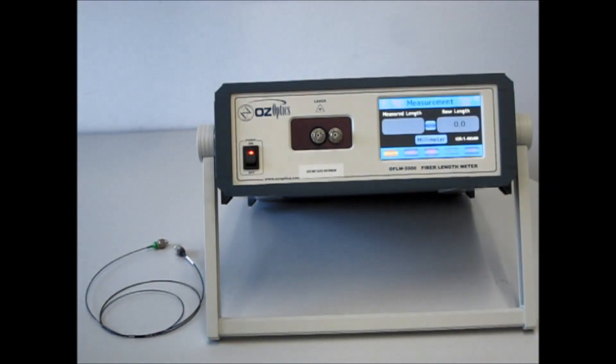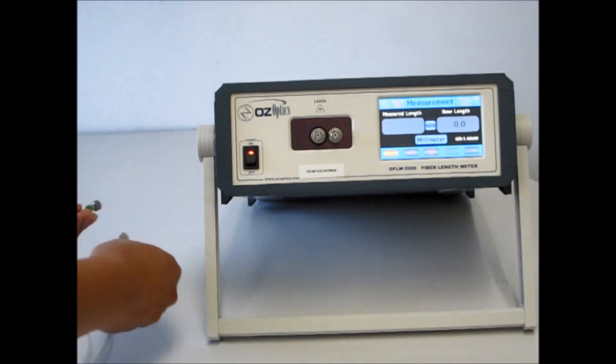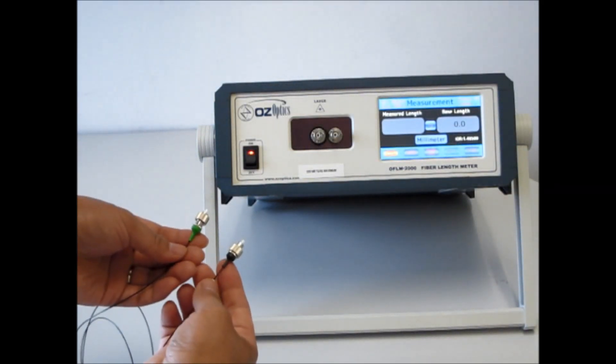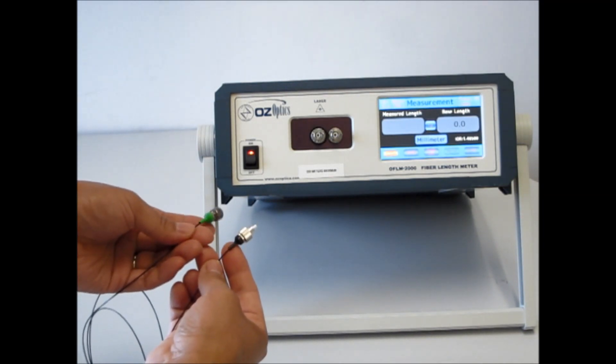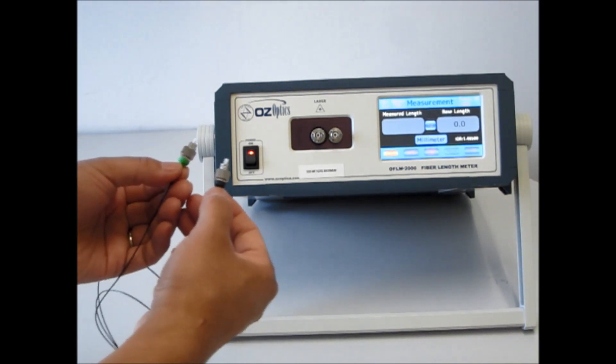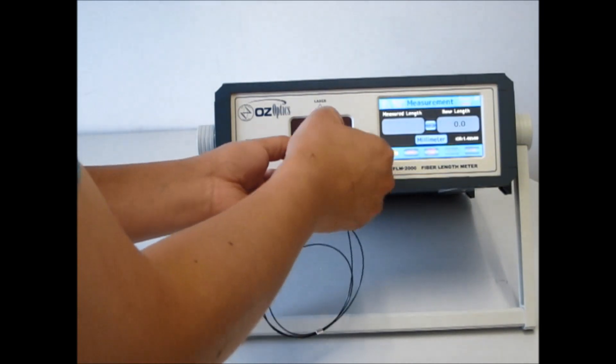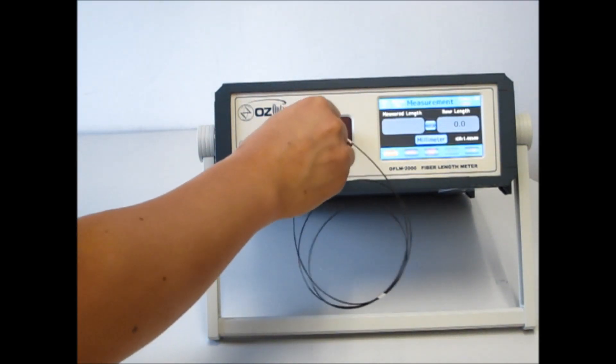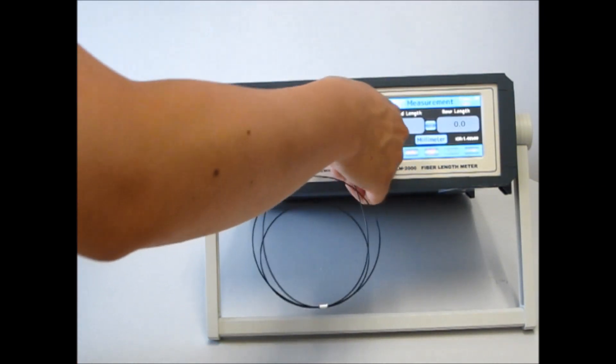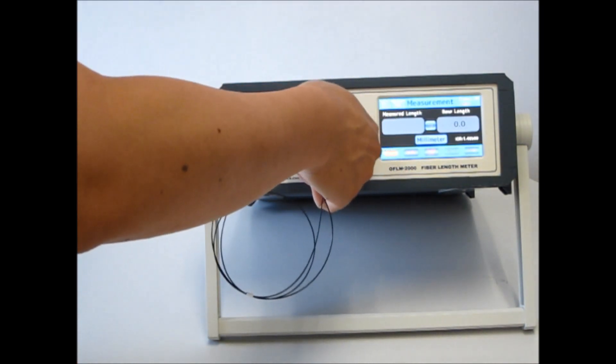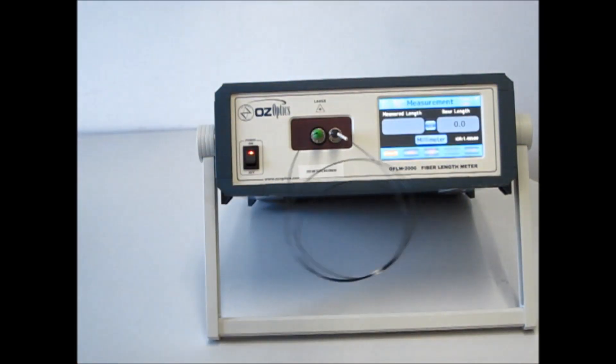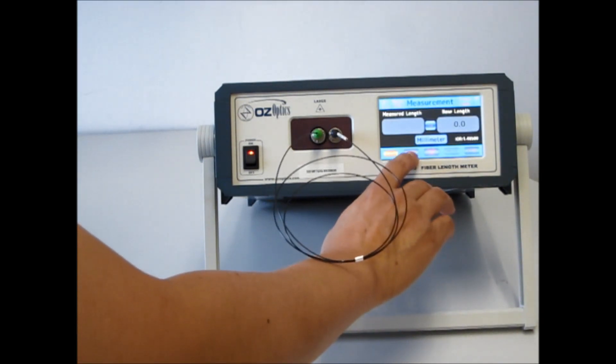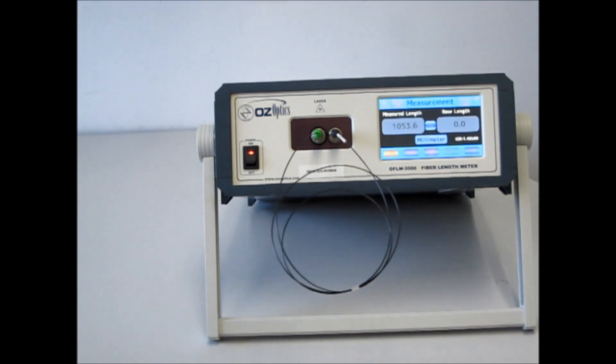Here we have a polarization-maintaining patch cord with an FC-PC connector on one end and an FC-APC connector on the other end. Let's plug this in. You'll notice that the end with the green boot is on the left port and the end with the black boot is on the right port. We'll tighten up the nuts and push the run button. The measured length is 1,054 millimeters.